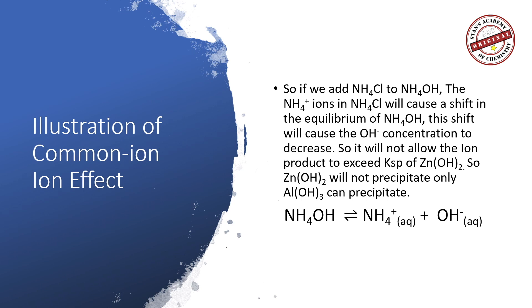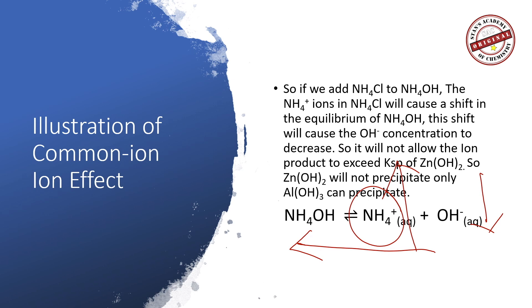This is the equilibrium: ammonium hydroxide as the weak electrolyte. If we increase the concentration of NH₄⁺ ions by adding ammonium chloride, Le Chatelier's principle tells us the equilibrium shifts left, producing more undissociated ammonium hydroxide and reducing the hydroxide ion concentration. As a result, the ion product of zinc hydroxide will not exceed its KSP. However, since aluminum hydroxide has a very low KSP, its ion product will easily exceed the KSP, precipitating aluminum hydroxide selectively.